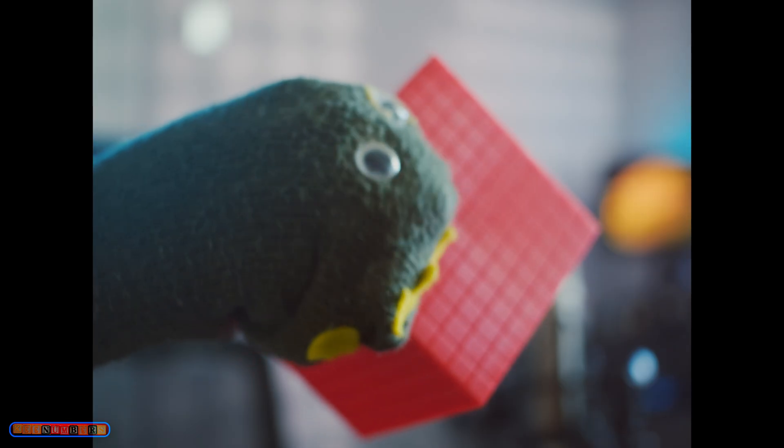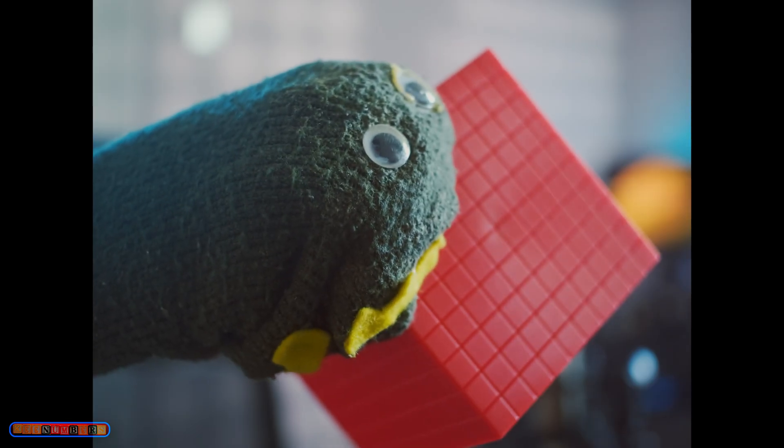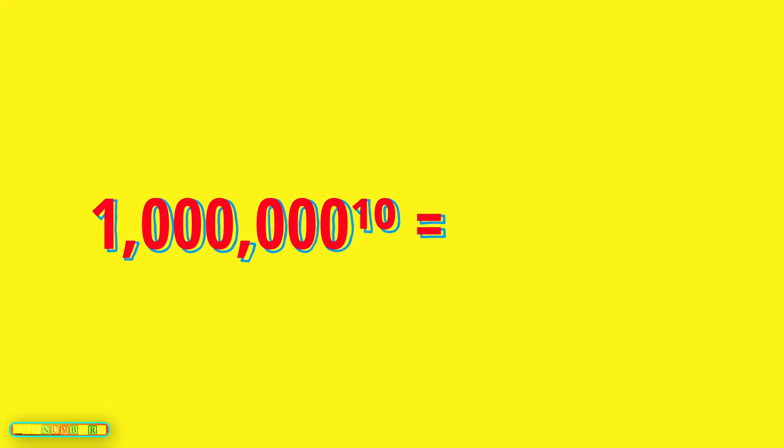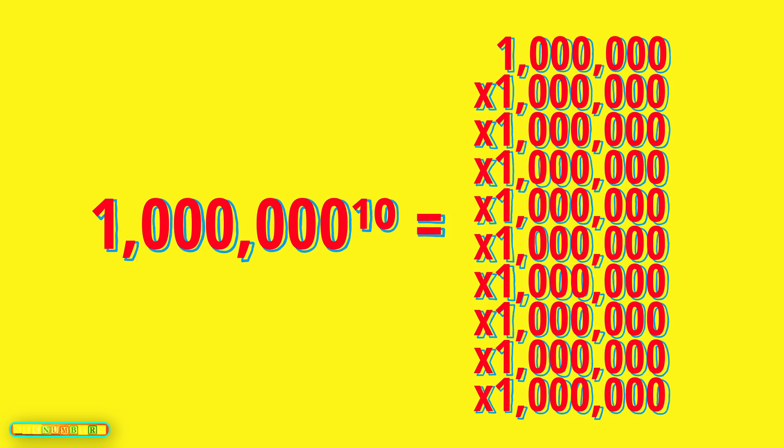Now let's look at the cube. If you have 1 million of those squares, that would be 1 million times 1 million times 1 million, or 1 million cubed. So you're looking at 6 plus 6 plus 6, which is 18 zeros. 1 followed by 18 zeros is known as a quintillion.